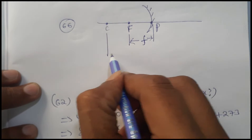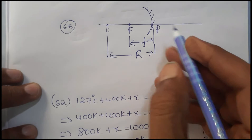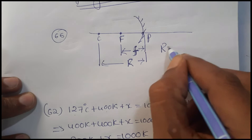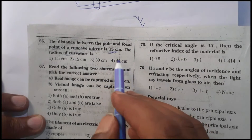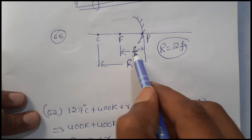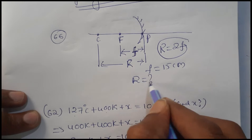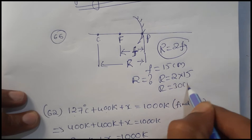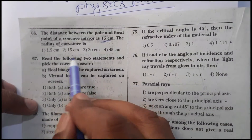The center of curvature is further along, and the relation between radius of curvature and focal length is R equals 2F. In this problem, the focal length f is given as 15 centimeters, so the radius of curvature R equals 2 into 15, which equals 30 centimeters. The answer is 30 centimeters.